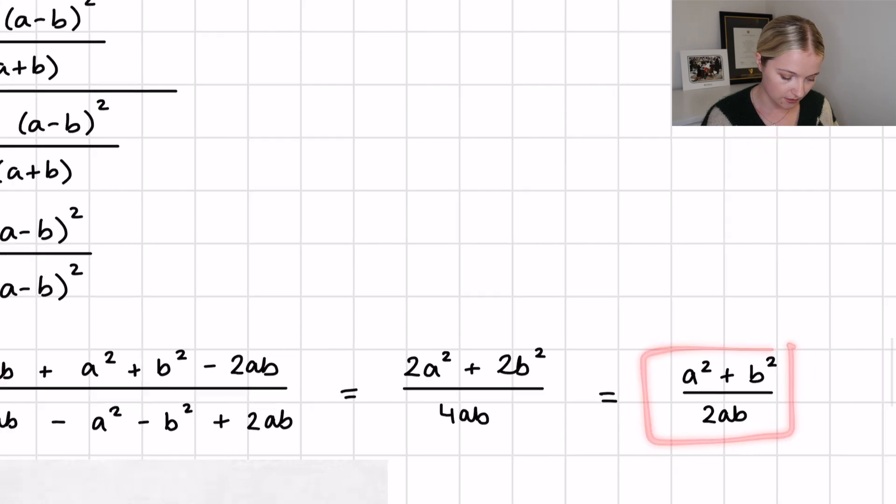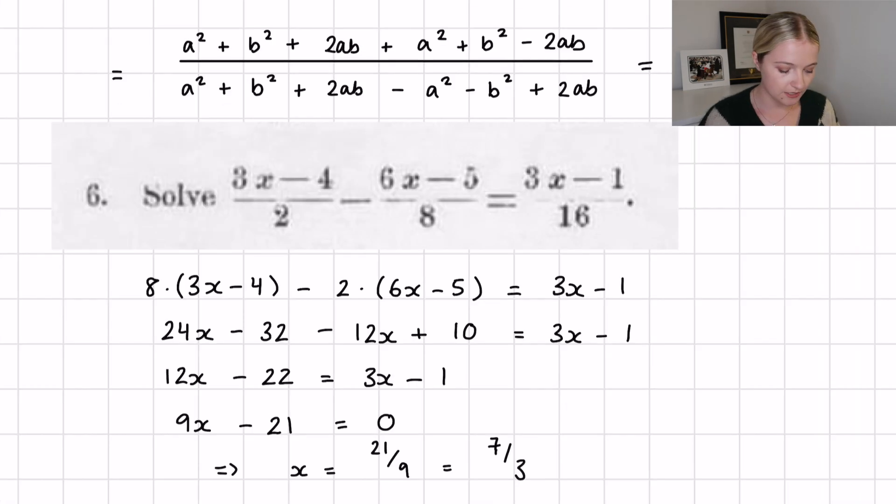Now question six asks us to solve 3x minus 4 divided by 2 minus 6x minus 5 divided by 8 equals 3x minus 1 divided by 16. To cancel these fractions off the bottom, I just multiplied by 16, so we have an 8 out the front multiplied by this, we have a 2 out the front multiplied by this, and then we just have the 3x minus 1. Then we can do some very nice tidying up, we find this equation here in terms of x, and we get x equals 21 divided by 9 or 7 over 3. That is the answer for question six.